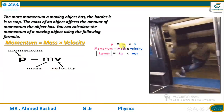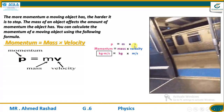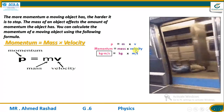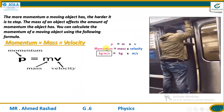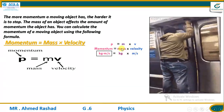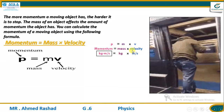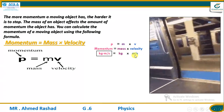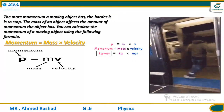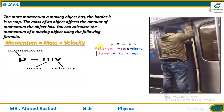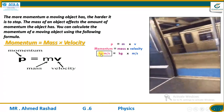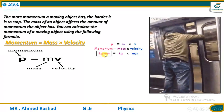P equals M times V, so momentum equals mass times velocity. The momentum units depend on the mass units and velocity units. Mass is in kilograms and velocity is in meters per second — those are the SI, or international system of units. So the unit of momentum is kilogram times meter per second.